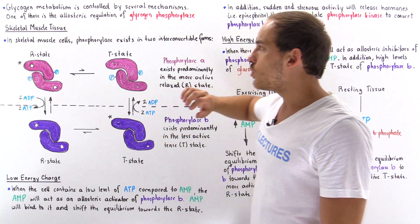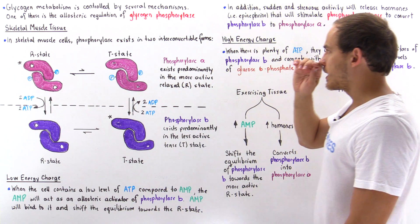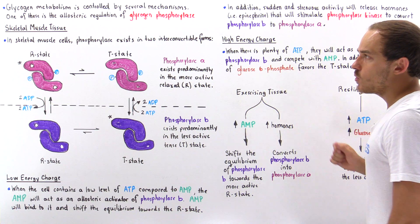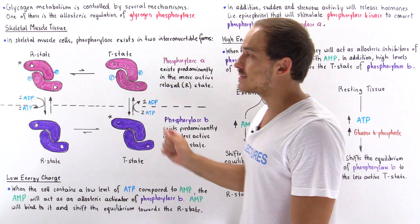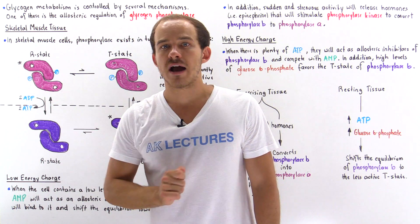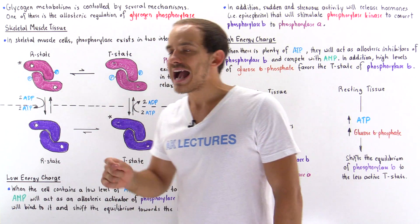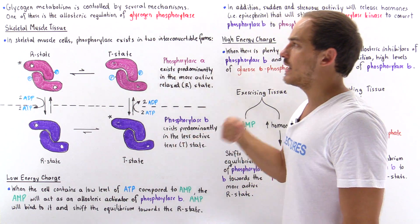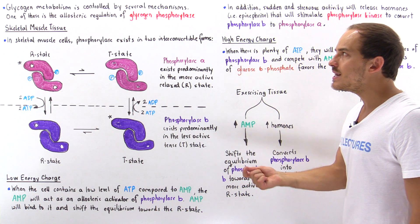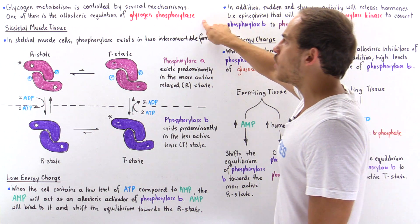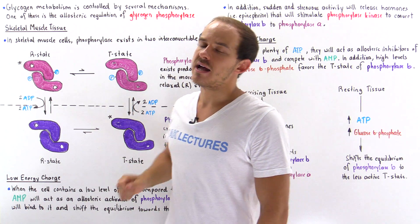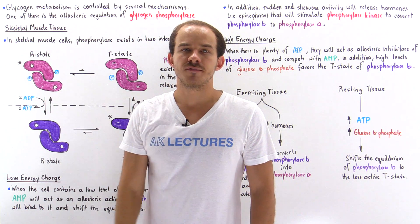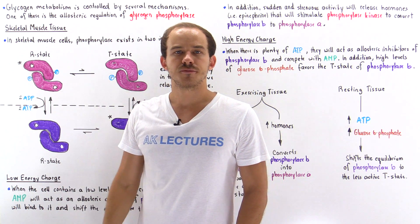In the next lecture, we're going to focus on how hepatocytes — the liver cells of our body — actually regulate glycogen breakdown by controlling this allosteric enzyme glycogen phosphorylase.